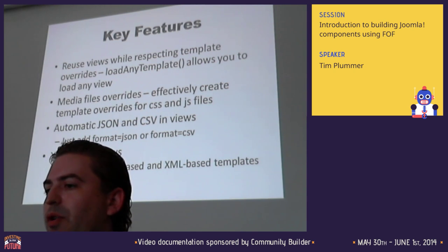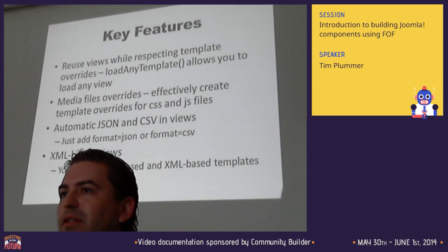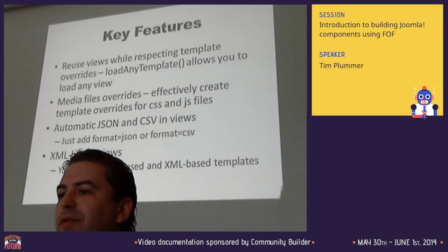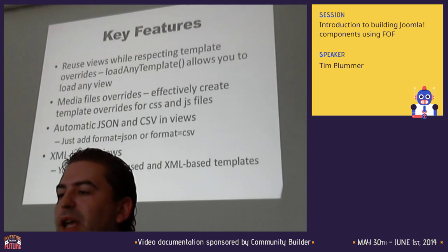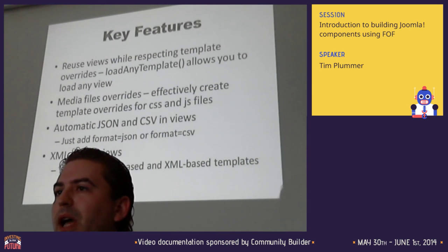There's also automatic JSON and CSV output for any view. You can just append 'format=json' to the URL and it'll output that view in JSON format. Same with CSV - just add 'format=csv' and that'll output the view as CSV. Very handy for extracting data or linking with other applications.